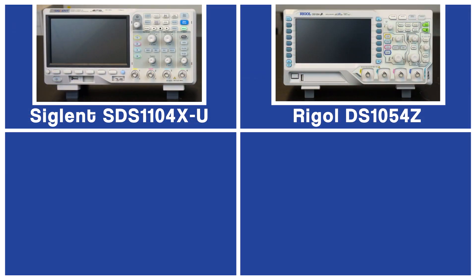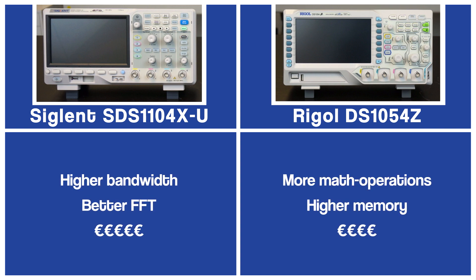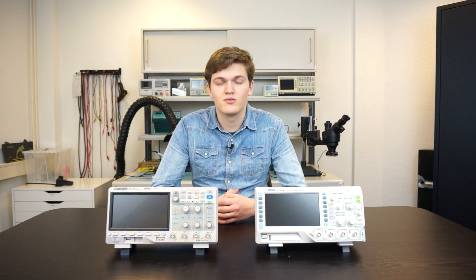In conclusion, if you have to choose between both devices, it comes down to what you want to use the device for. If you intend to use all kinds of different math operations or need a bigger memory, the Rigol is a better choice. If you need double the bandwidth or a better FFT quality, then the Siglent oscilloscope is better. Ultimately, there's little difference in price between the two devices. Thanks for watching and hopefully I'll see you at the next video.